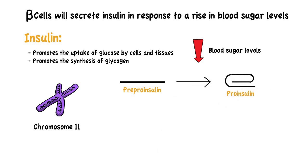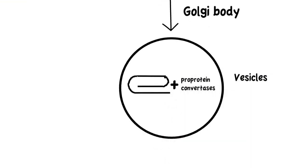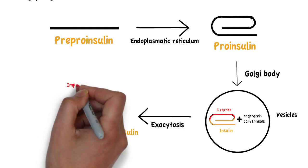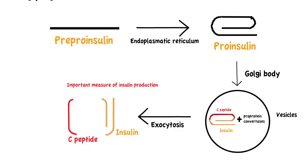Pro-insulin travels to the Golgi body where it is packaged into vesicles together with pro-protein convertases, which will convert pro-insulin into insulin. Pro-insulin comprises the amino acid sequence of insulin and a peptide fragment called the C-peptide, which is cleaved. Once exocytosis occurs, both insulin and the C-peptide are released. Therefore, the C-peptide is an important measure of the amount of insulin being produced in the body.